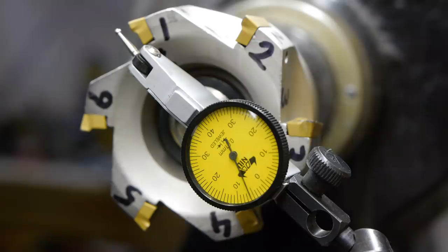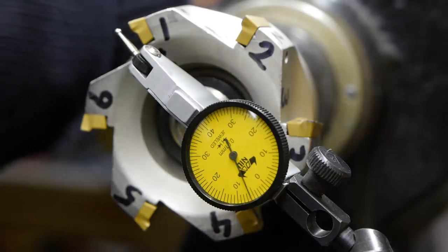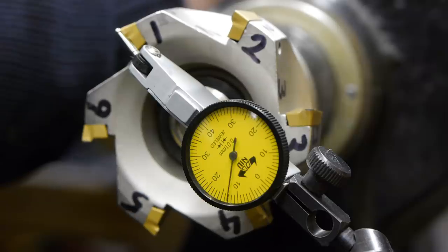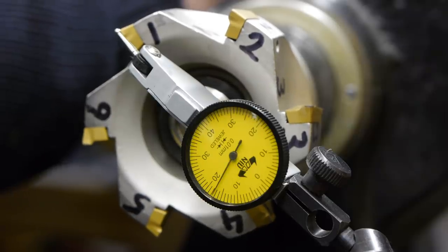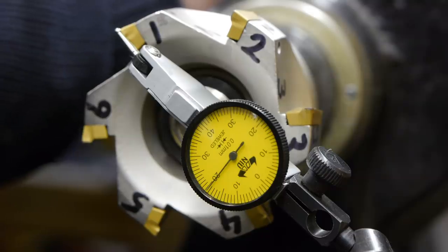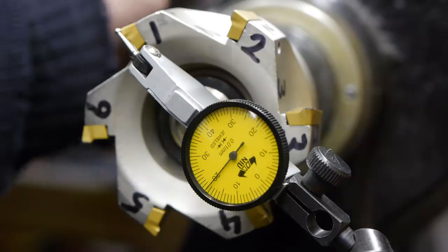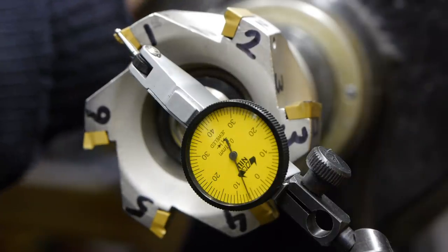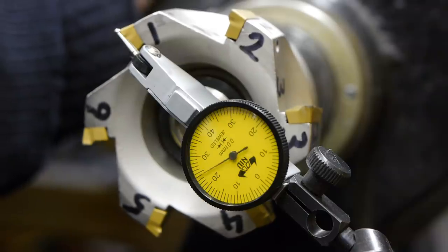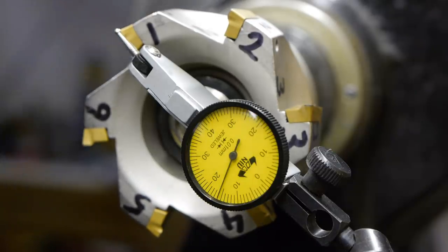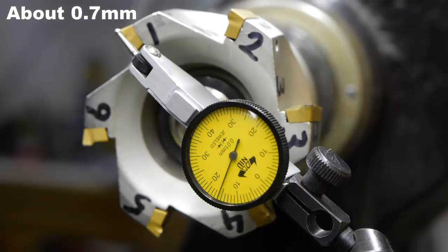This spindle has a bit of runout, but that shouldn't matter for this test. So now I'm going to see how much axial play I have. First I'm going to push the spindle away from me, and that's a bit more than 20. And now I'm pulling the spindle towards me, or the pulley. 26, maybe 27. So there is definitely some axial play in the spindle, but I guess that is needed for some oil clearance. But it might have an effect on the surface finish.